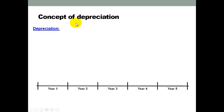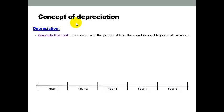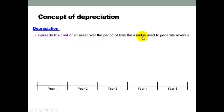First of all, the concept of depreciation — what does it actually mean? Well, depreciation is when an asset that we buy, commonly a non-current asset, for example like a car, a computer or building, it spreads the cost of an asset over a period of time that is used to generate revenue.